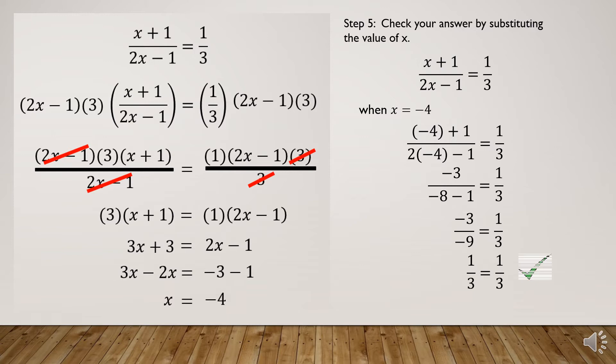Therefore, x = -4 is the value of x that satisfies the given rational equation.